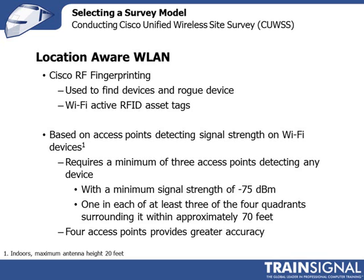If four access points can hear the device, you'll get a greater degree of accuracy. Note that these minimum requirements are for an indoor environment with a maximum antenna height of 20 feet. Location services really don't work very well if your antenna goes above 20 feet. In environments like factories with very high ceilings, you might want to drop your access points down on some structure to keep them at 20 feet or below to ensure location accuracy.